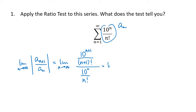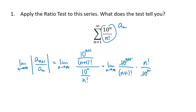Now we have a fraction divided by a fraction, so we're going to flip over the bottom fraction and multiply. So we have 10 to the n+1 divided by (n+1) factorial, times n factorial divided by 10 to the n. The 10 to the n+1 and the 10 to the n — we've got one extra factor of 10 on the top.